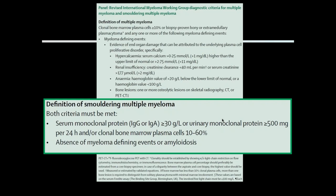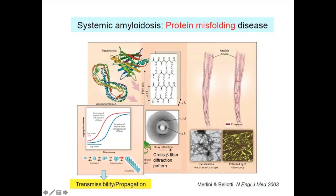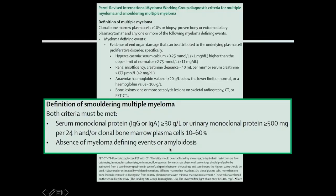The definition of smoldering myeloma has changed: more than 60% plasma cells now classifies as multiple myeloma requiring treatment. Also, if a patient has smoldering myeloma with amyloidosis, that is also a reason to start treatment.